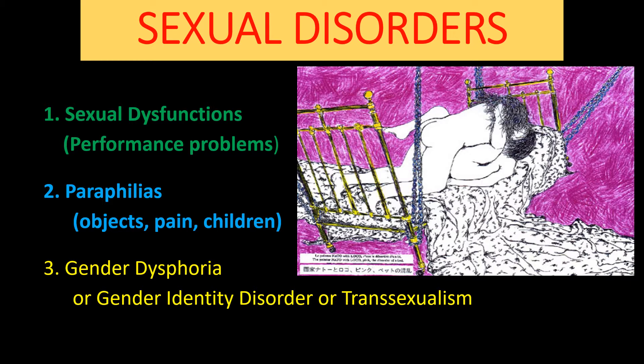The second big category is called the paraphilias. 'Philia' is a suffix that means something like enjoying or liking. In this case, it refers to getting pleasure from sex in a way that's considered inappropriate or culturally unacceptable — for example, using certain objects to get sexual satisfaction, using pain to get sexual enjoyment, or having sex with children, which is very harmful to society. These paraphilias are sexual disorders that are often unacceptable and frequently against the law.